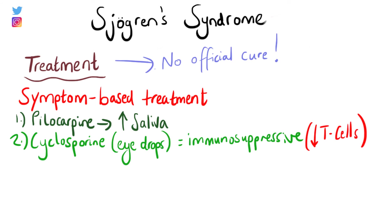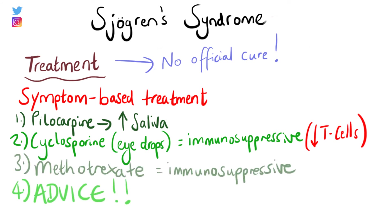Because Sjogren's syndrome is due to immune system hyperreactivity, certain immune-suppressing drugs like methotrexate may also be given. Patients are also given lifestyle advice, including wearing glasses to reduce drying of the eyes when outside, chewing gum to stimulate saliva production, and increasing fluid intake.